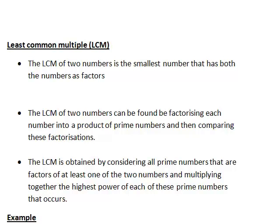The least common multiple of two numbers can be found by first factorising each number into a product of primes, and then comparing these factorisations. In particular, we consider all prime numbers that are factors of at least one of the two numbers, and multiply together the highest power of each of these prime numbers that occurs in each of the numbers.